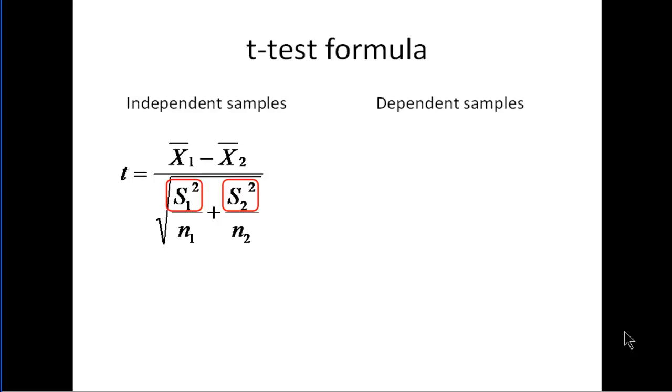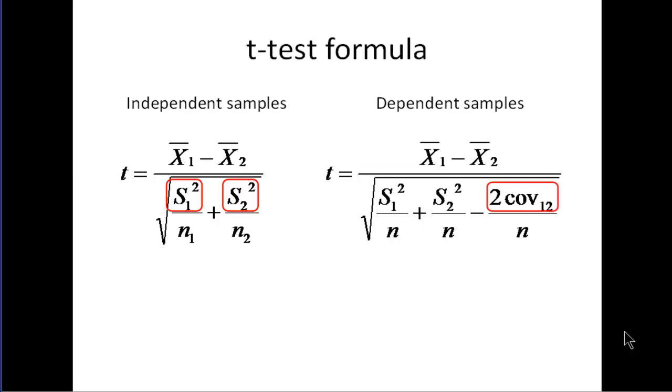In the dependent samples case, I think the best formula to represent the dependent sample t-test is this one here. It looks very similar to the independent sample t-test formula. But the key difference is that there's this term after the variances divided by the sample size, something multiplied by two. And that something is the covariance between scores at time one and scores at time two.